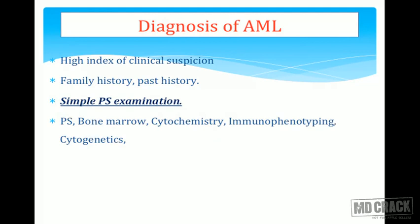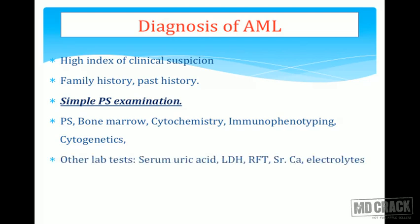To diagnose AML, you need a high index of clinical suspicion. Thoroughly examine the patient for hepatomegaly and splenomegaly. Take family history, history of radiation exposure, chemical exposures such as benzidine or benzene, and drug history — some AMLs are therapy-related and carry very bad prognosis. The most important investigation is detailed peripheral smear examination by a pathologist, followed by bone marrow examination, cytochemistry, immunophenotyping, and cytogenetics.